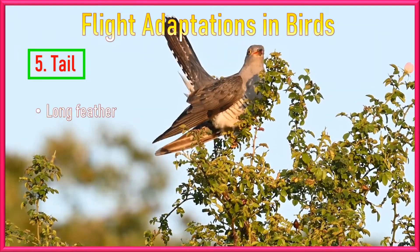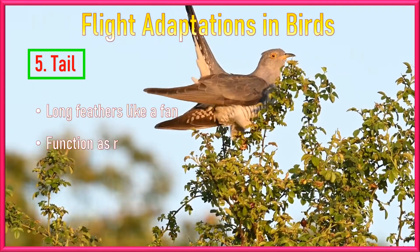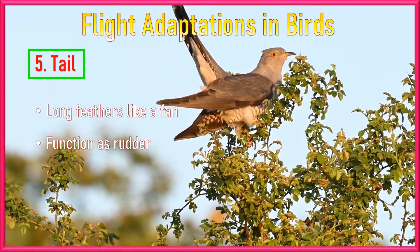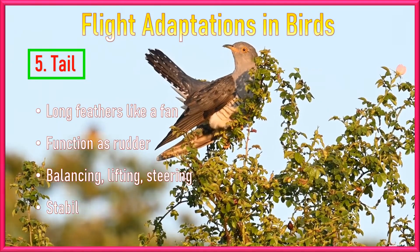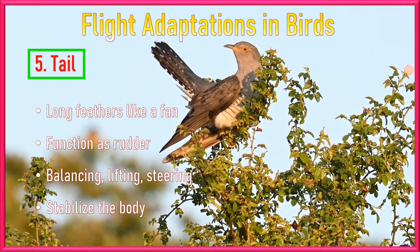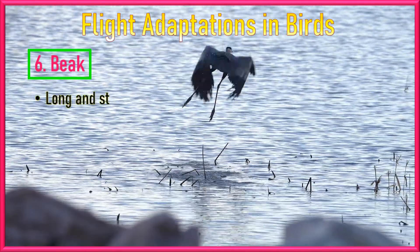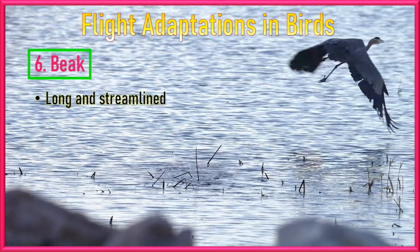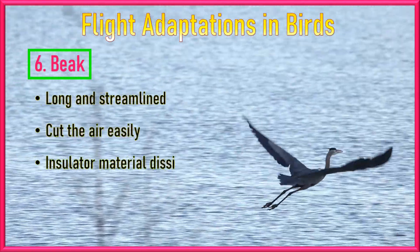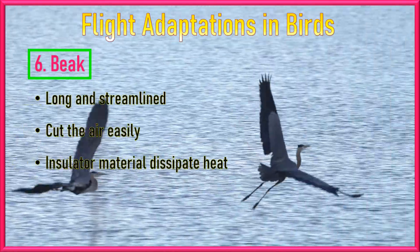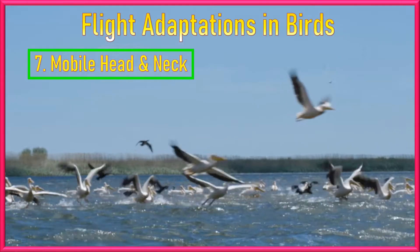Number 5: Short Tail. The tail bears long feathers that spread like a fan and function as a rudder during flight. They also help in balancing, lifting, and steering while flying and perching, to stabilize the body on shoots or wires. Number 6: Beak. The beak is long and streamlined to cut the air easily. It is made up of strong keratin, which is an insulator and dissipates heat due to friction during flight. It also helps to take a turn during flight.